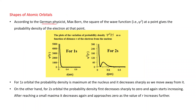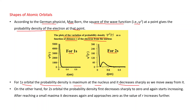According to German physicist Max Born, the square of the wave function — psi² — at a point gives the probability density of the electron at that point. These are the plots of the variation of probability density psi²(r) as a function of distance r for 1s and 2s. For the 1s orbital, the probability density is maximum at the nucleus and decreases sharply as we move away.